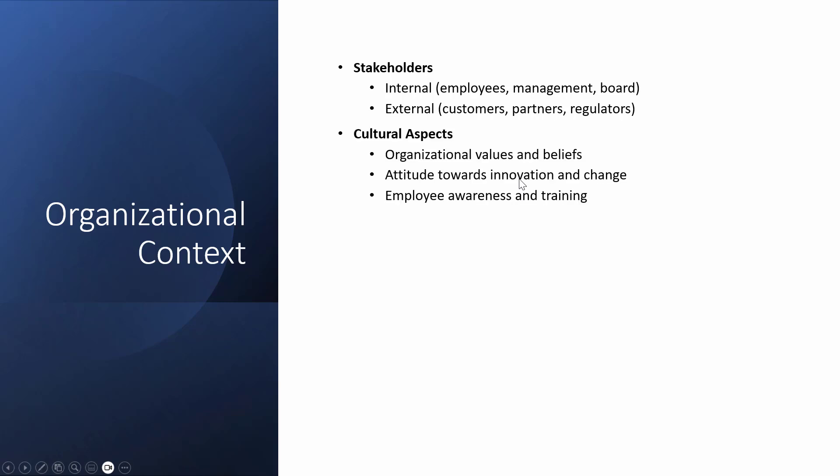We also need to understand the cultural aspects. Culture is very important — a company's high or low risk tolerance comes from its culture: how they perceive risk, security, and business. For example, one company whose employees are highly motivated and report incidents demonstrates good security culture. But a company where employees don't report security incidents — because managers don't model that behavior — shows a poor culture. Culture covers values and beliefs, attitude toward innovation and change, and employee awareness training. These are all areas to check when building organization context.